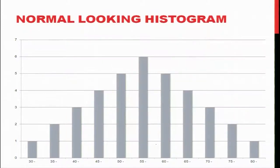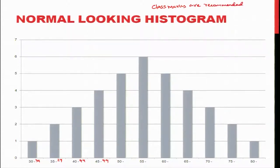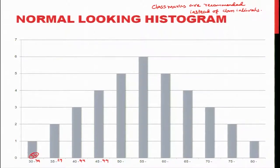Looking at the data, we have classes: 30–34, 35–39, 40–44, 45–49, and so on. Class marks are recommended instead of class intervals, so for example the 30–34 interval can be represented as 32, which is the class mark for that class.